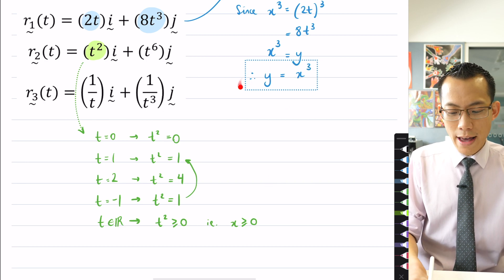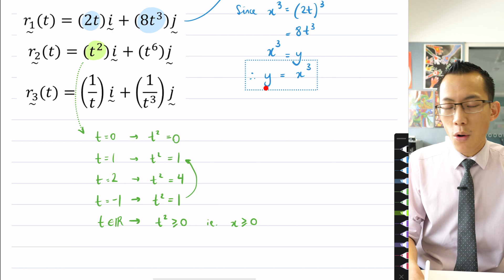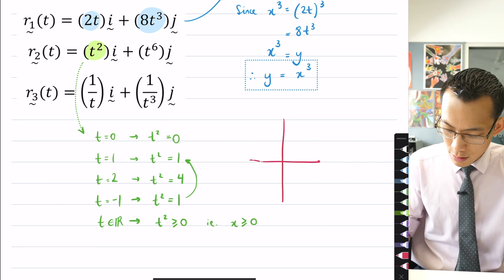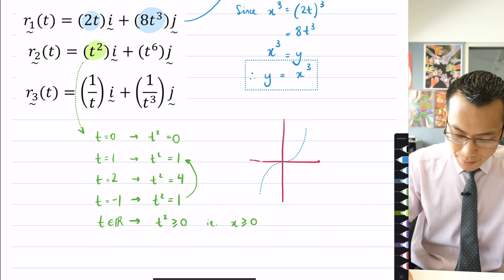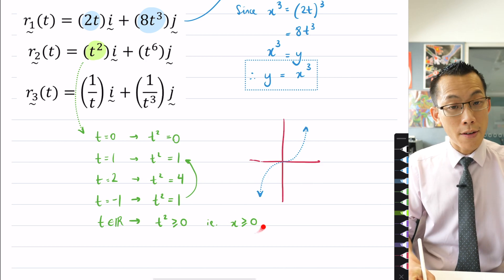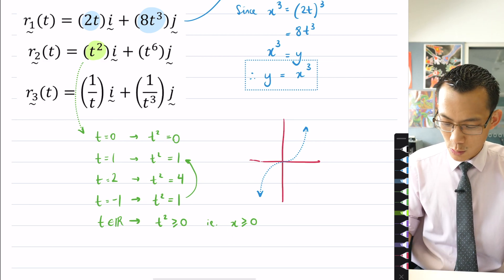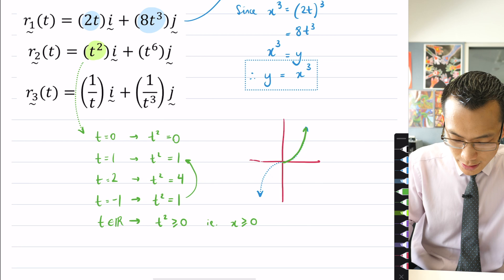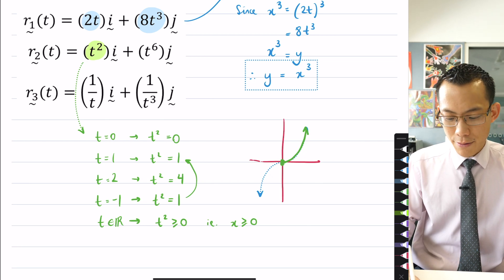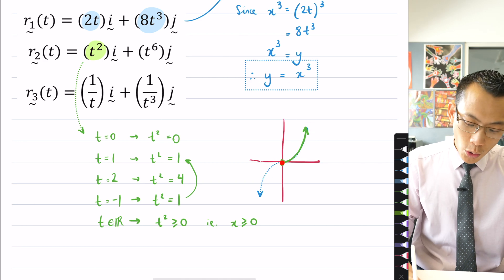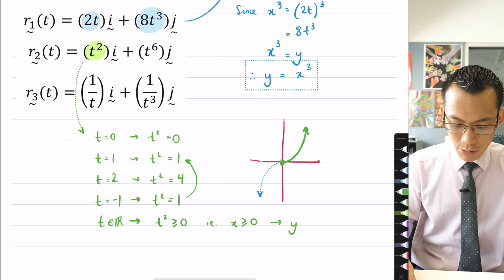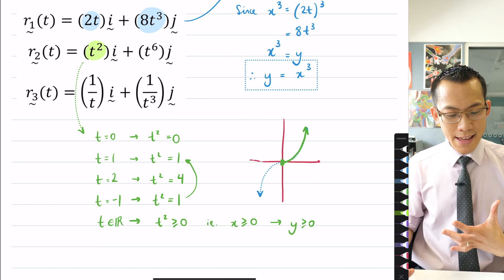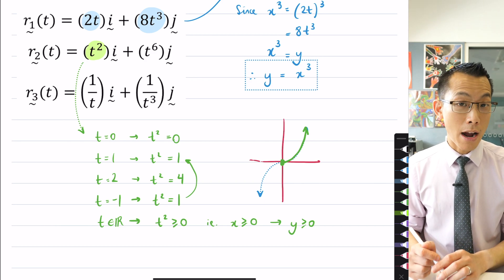So noticing that t² is greater than or equal to zero, no matter what value t takes on within the real number sphere. What that means is that x itself has to be greater than or equal to zero, because that's what the x values come from, from this t². So this is a domain restriction you can see here that is implied, it's not explicit, but it's implied by the particular parametric equation that you've got. Now if x is greater than or equal to zero, think about what the y equals x³ curve looks like. You're only going to get positive values for y as well.